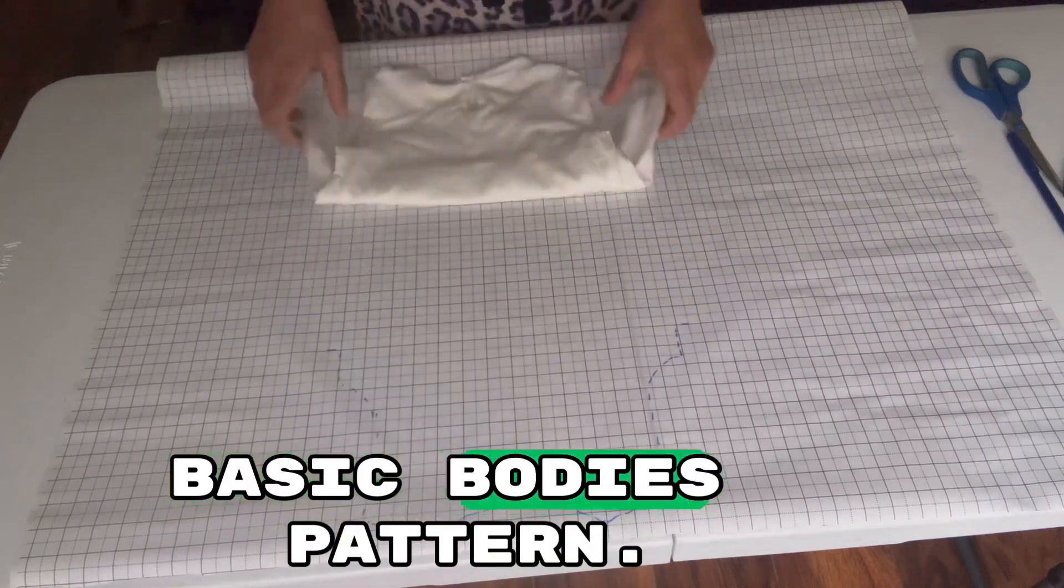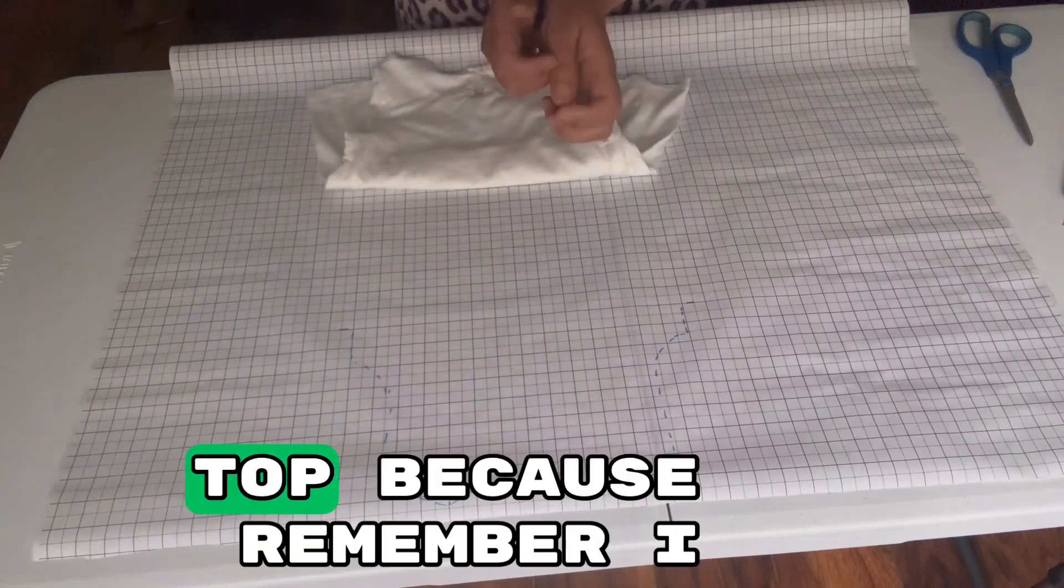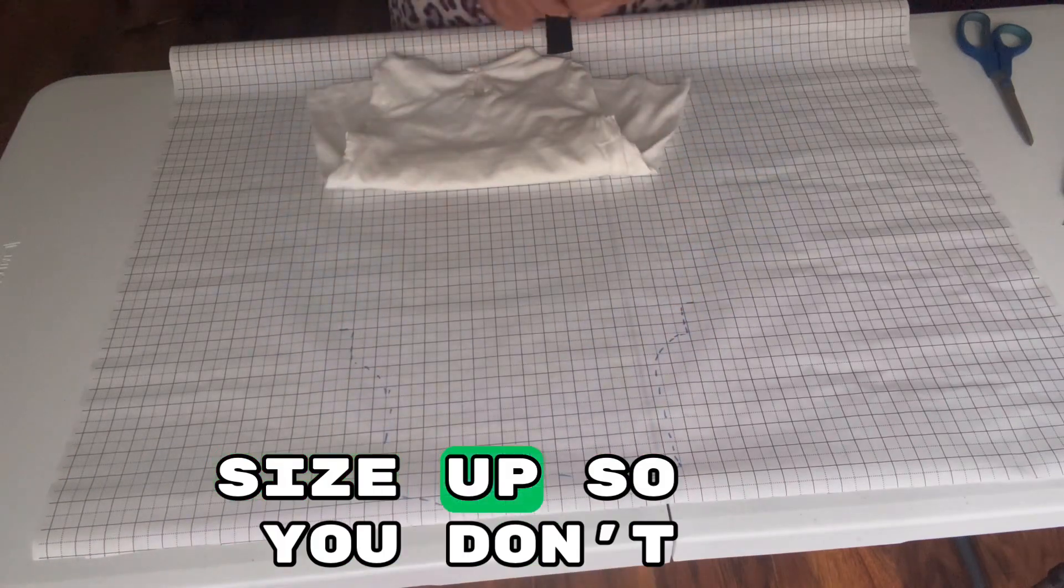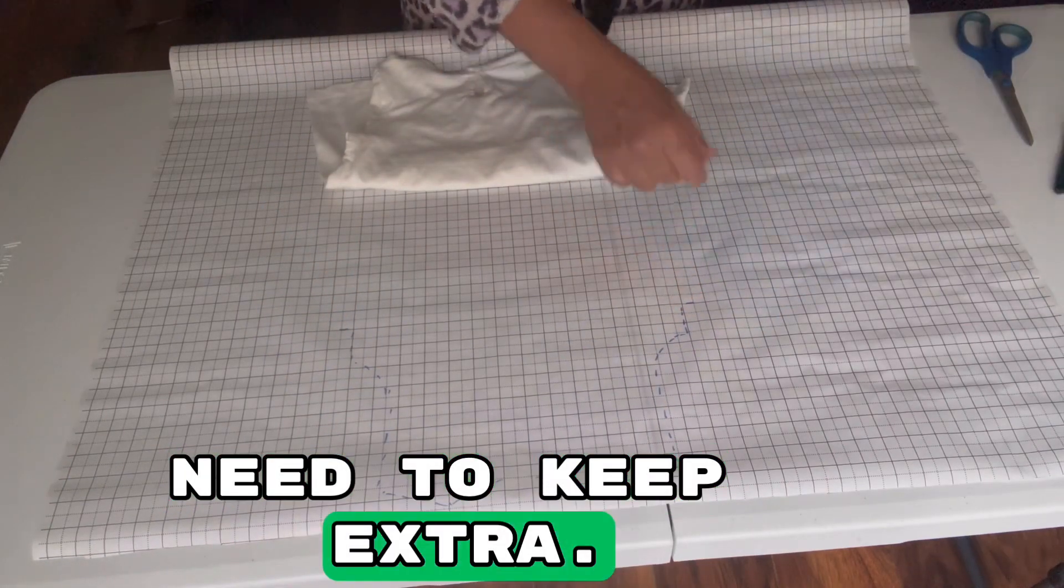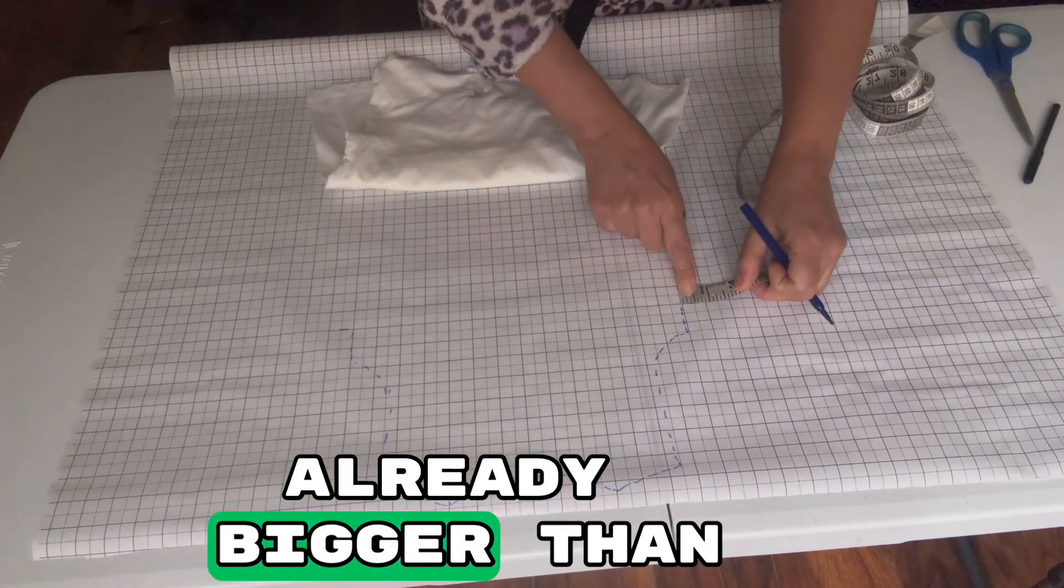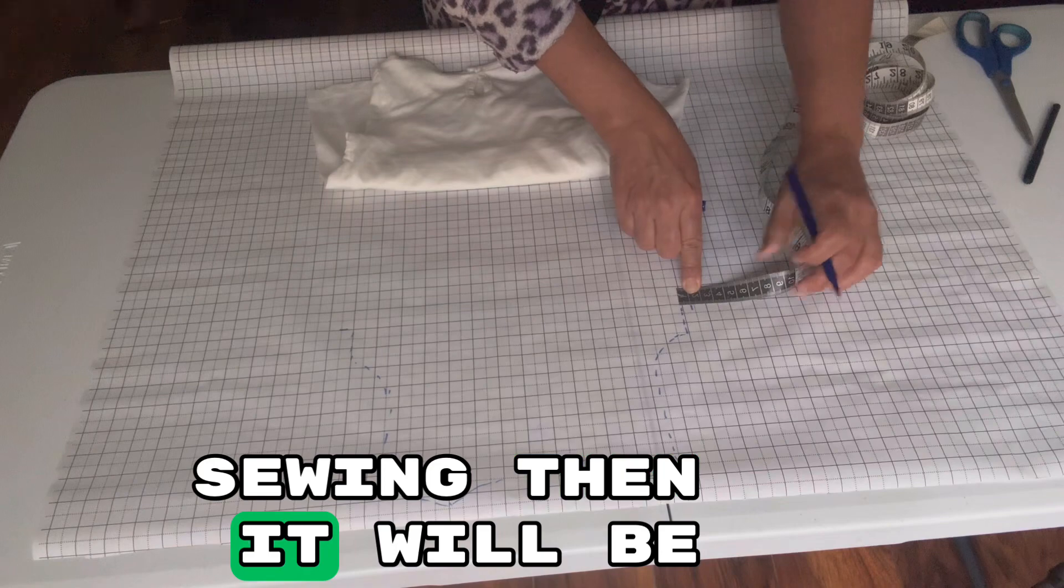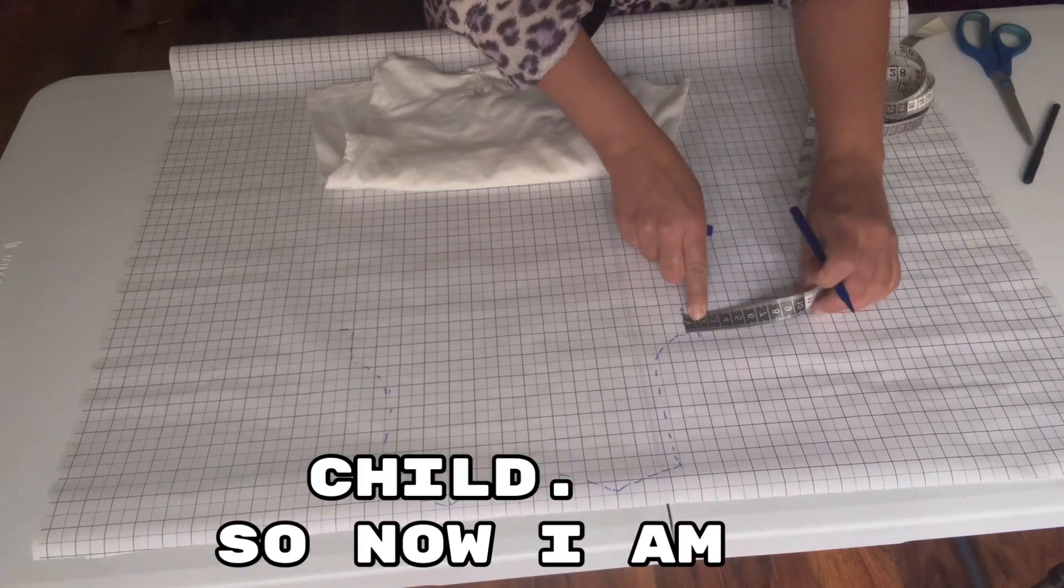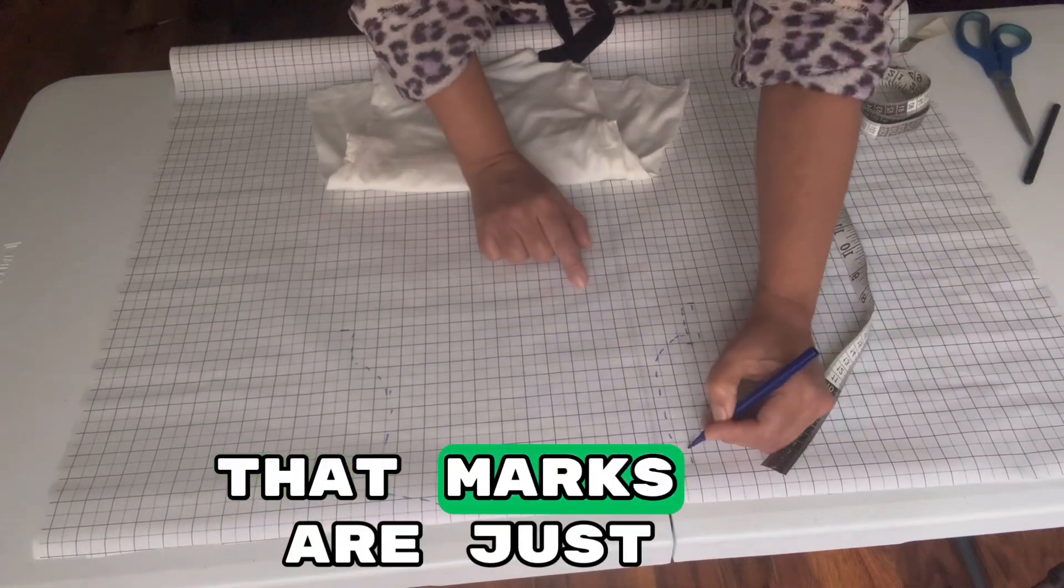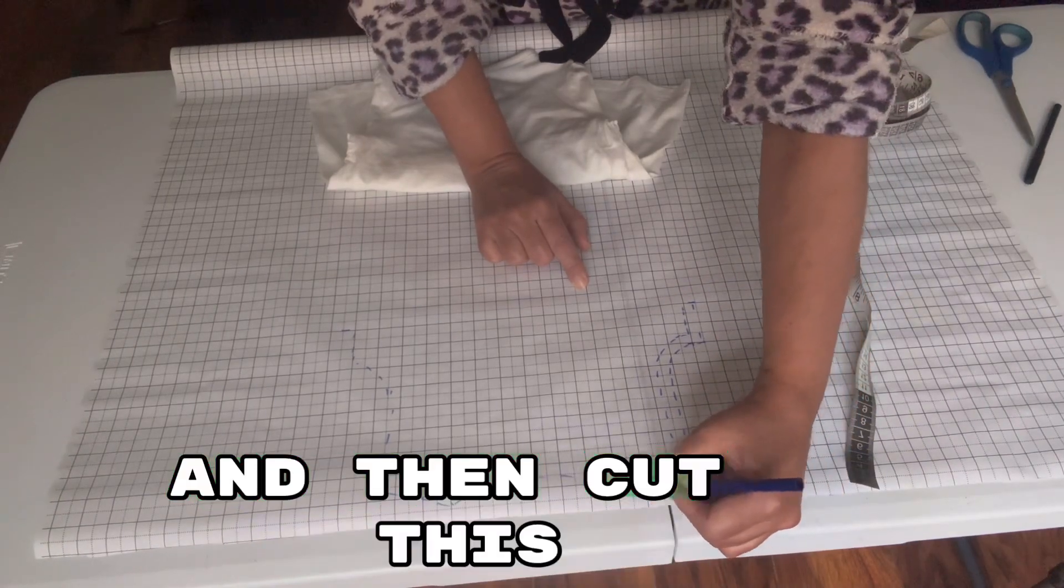First of all we're just cutting a basic bodice pattern. I have made all the dotted marks around this top. Remember, I took this size one size up, so you don't need to keep extra seam allowance because it's already bigger than the original size. When we finish sewing it will be exactly fit to the child. Now I am just simply making sure that marks match all the points, and then cut this pattern.